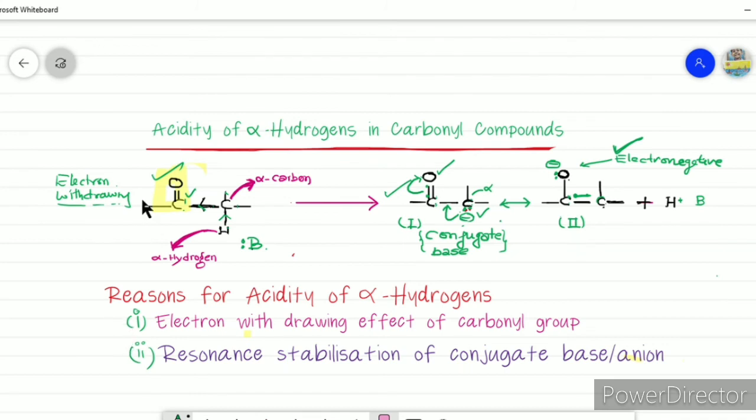There are two reasons which explain the acidity of alpha hydrogen. Number one, the carbonyl group is electron withdrawing. Number two, the conjugate base anion is resonance stabilized via delocalization of negative charge onto the oxygen atom. This is the acidity of alpha hydrogens in carbonyl compounds.